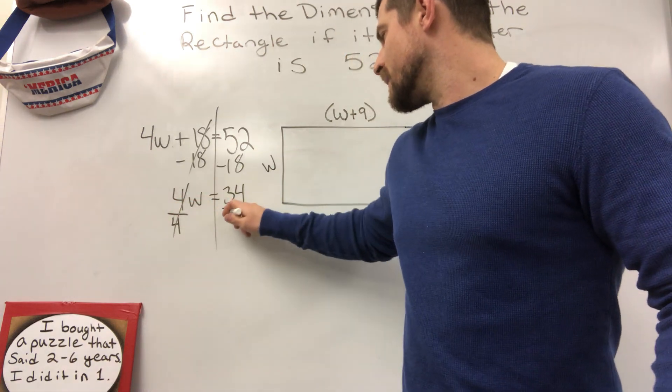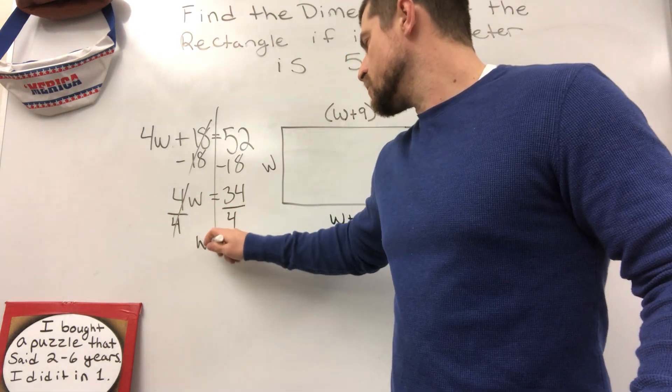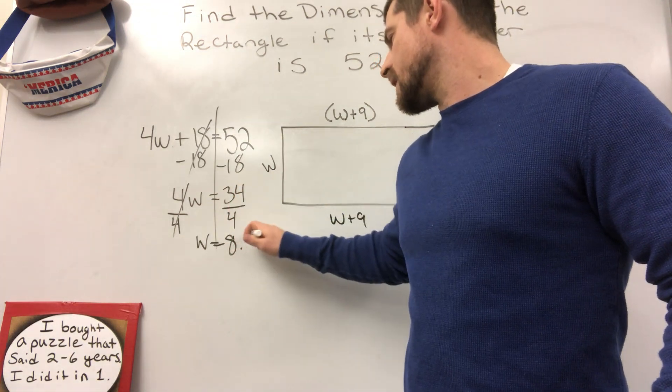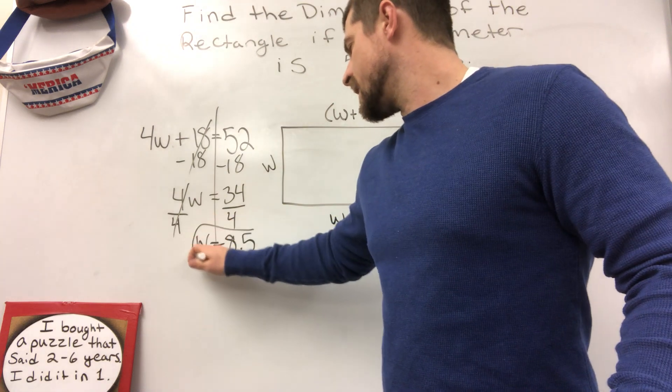Cancels it out. Divide by 4. W equals 34 divided by 4. We're going to get decimal 8.5 or 8 and a half.